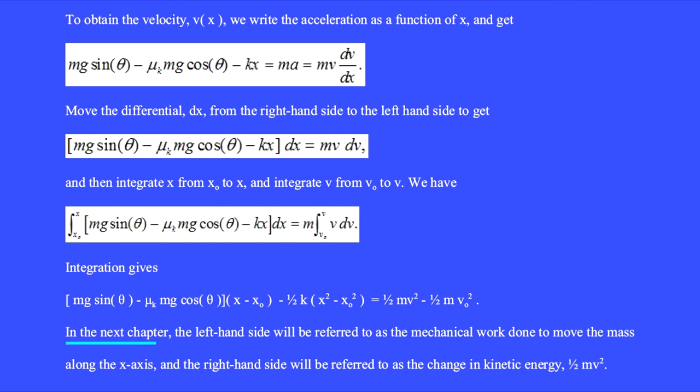In the next chapter, the left-hand side will be referred to as the mechanical work done to move the mass along the x-axis. And the right-hand side will be referred to as the change in kinetic energy, one-half mv squared.